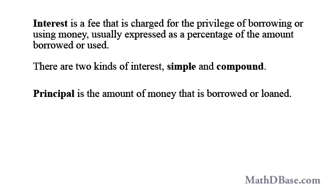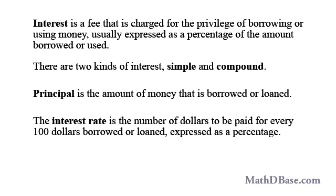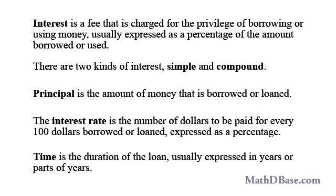Principal is the amount of money that is borrowed or loaned. The interest rate is the number of dollars to be paid for every $100 borrowed or loaned, expressed as a percentage. Time is the duration of the loan, usually expressed in years or parts of years.